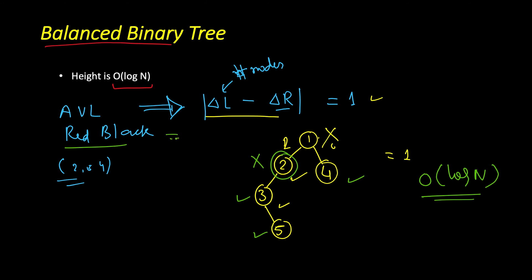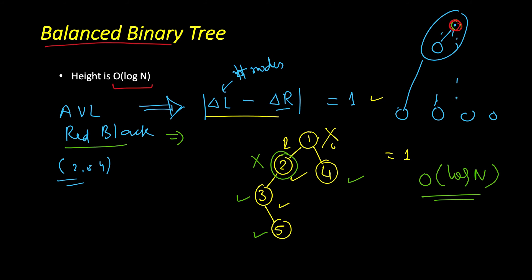Similarly, a red-black tree has another property: every node is colored either red or black. There are certain constraints — all the leaves must have the same black depth, meaning the path from the root to any leaf must contain the same number of black nodes. Additionally, there should not be two consecutive red nodes, though there can be two consecutive black nodes. These are the different properties that keep red-black trees balanced.